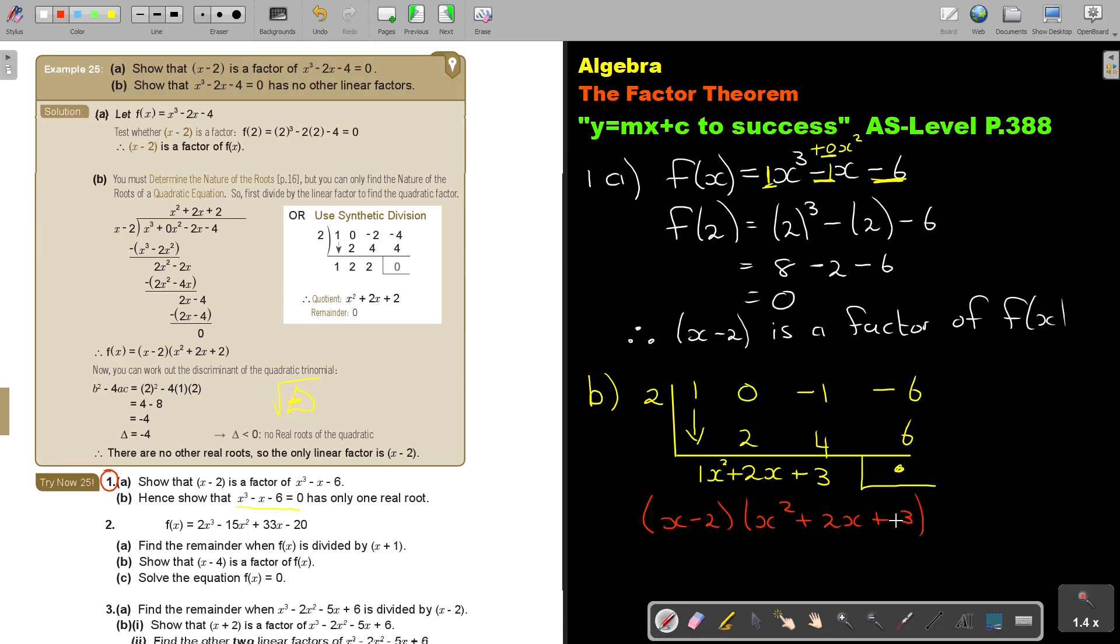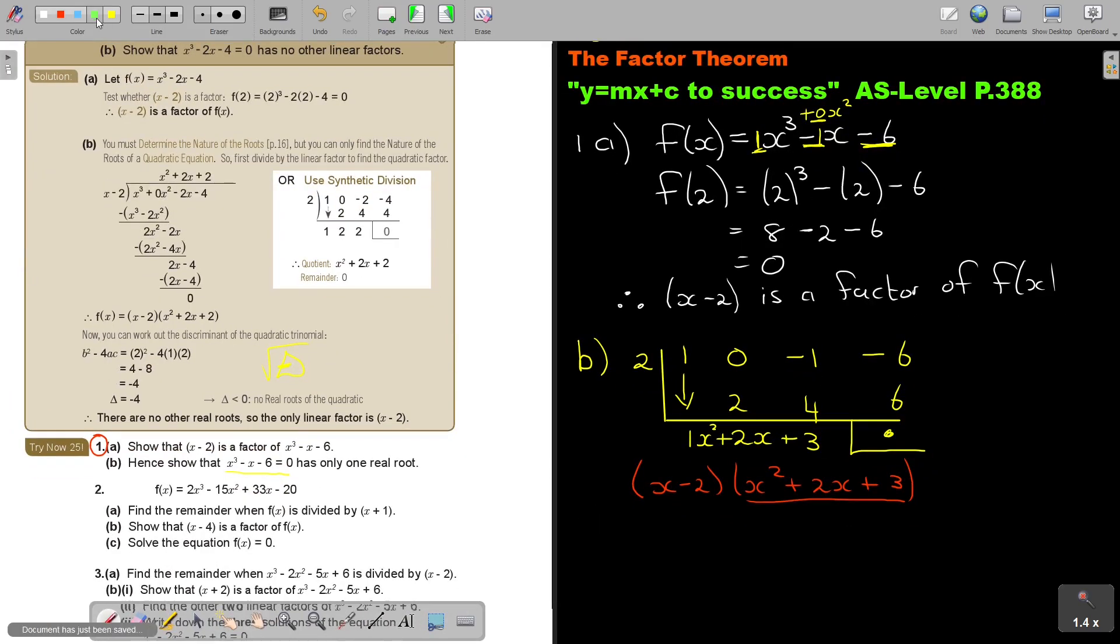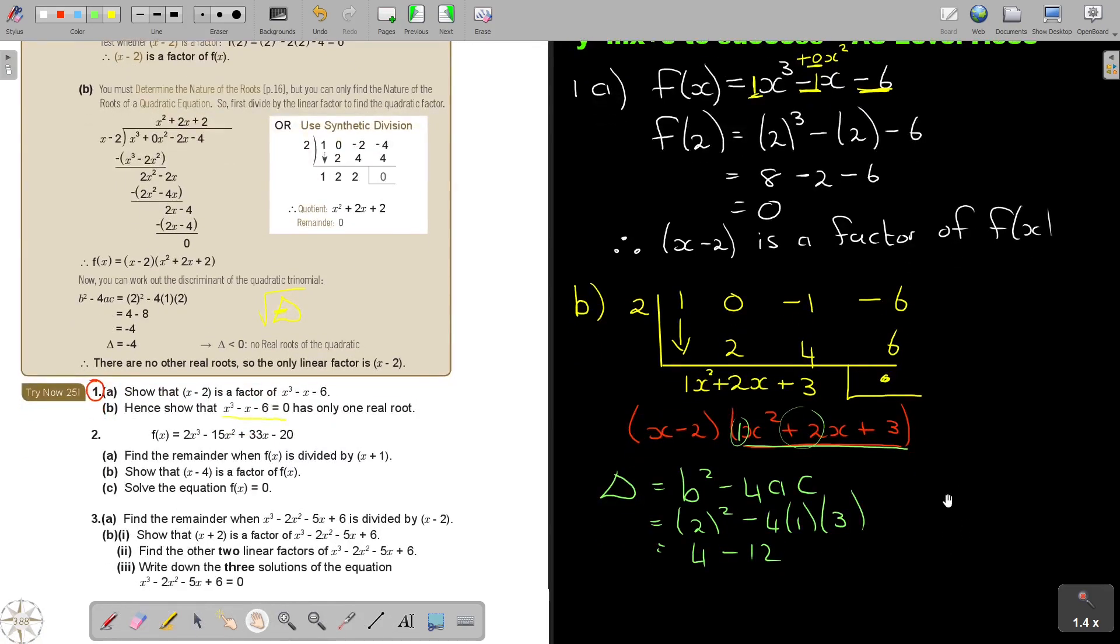But now I'm going to work out the discriminant of this quadratic part. Let's just move this up a little bit. So the discriminant of this part is b² - 4ac. This is a, this is b, and this is c. So b is 2, a is 1, and c is 3. So this is 4 minus 12, and that is going to be -8.